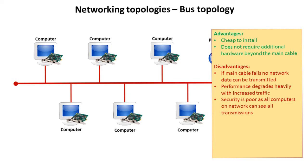A physical bus topology — meaning the physical way the cables are laid out — is fairly cheap to install. It doesn't require additional hardware beyond the central main cable. However, there are quite a lot of disadvantages, which is one reason we really don't see it anymore. If this main cable fails, no network data can be transmitted. Performance also degrades heavily with increased traffic on the shared line, and security tends to be poorer, as all computers can see all transmissions going up and down the shared bus cable.